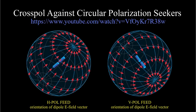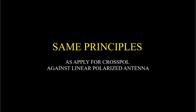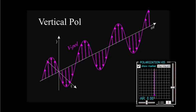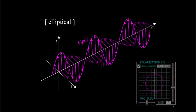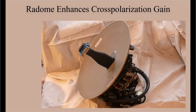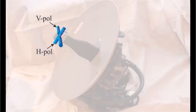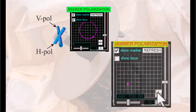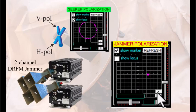A while ago I made a video about cross-pole jamming against circularly polarized seekers, and here's the link. The principles are the same as for cross-pole against a linearly polarized antenna, except circular polarization is a linear superposition of both vertical and horizontal polarizations simultaneously, with a phase shift between the vertical and horizontal field components. If the vertical E-field lags the horizontal field by 90 degrees, that's right-hand circular; a 90 degree phase lead gives left-hand circular. The radome tweaks the polarization in the way already described in the earlier video. I also explained in principle how a two-channel drift-from-jammer could be designed to modulate the ellipticity of the reverse-sense circular polarization.